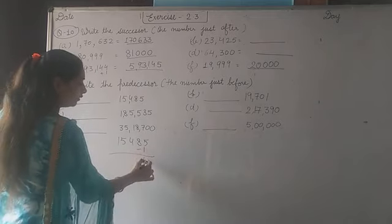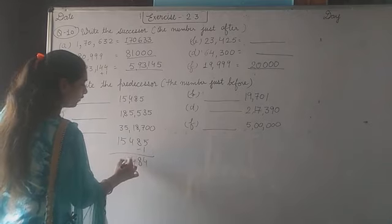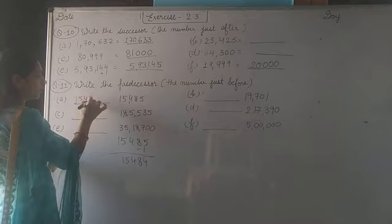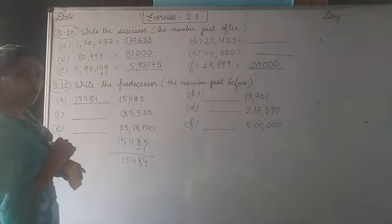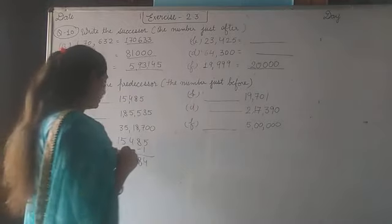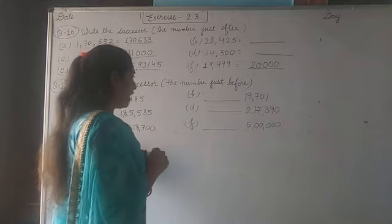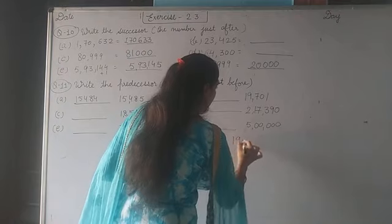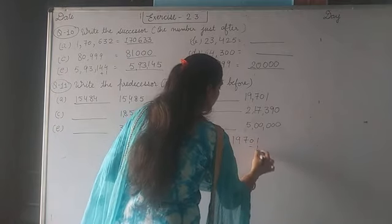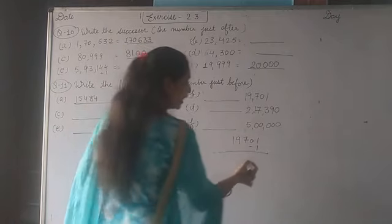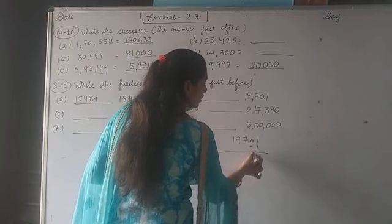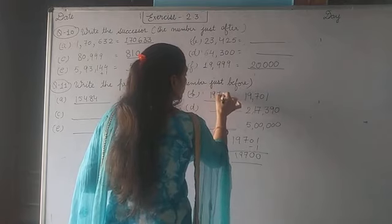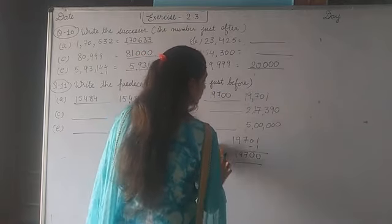Here is given fifteen thousand four hundred eighty-five. Now subtract one from this. 5 minus 1 is 4. 8 same, 4, 5, 1. The number is fifteen thousand four hundred eighty-four. Then next is the B part. It is given nineteen thousand seven hundred one. Subtract one. 1 minus 1 is 0, 0, 7, 9, 1. Answer is nineteen thousand seven hundred.